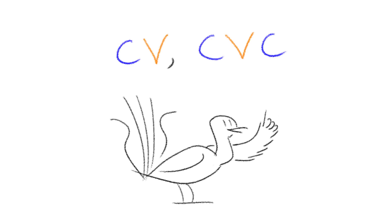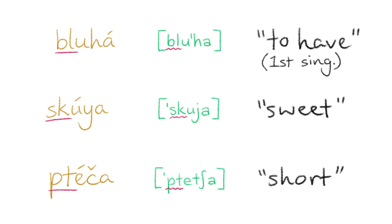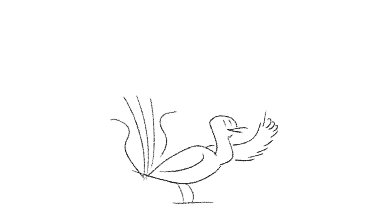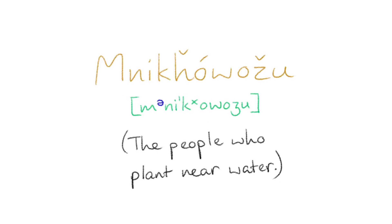Lakota has a largely CV or CVC syllable structure, which is kind of the default for most languages, and syllable onsets may contain consonant clusters. However, a small non-phonemic schwa may be inserted between the consonants in a consonant cluster, like in the name of the tribe Menikhoazhu, for example.